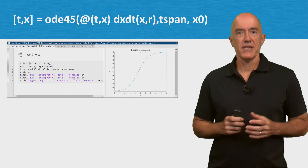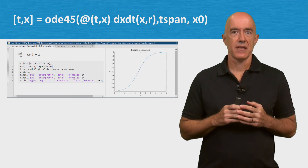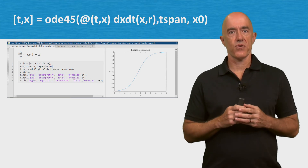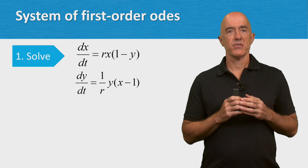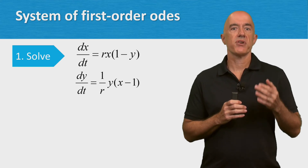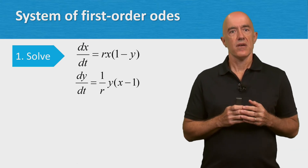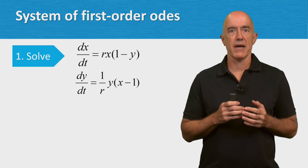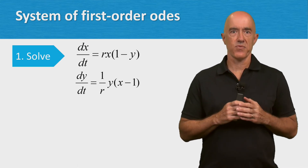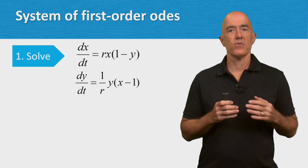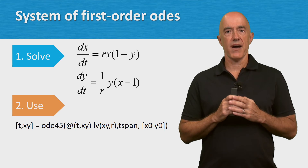The MATLAB function ode45.m is a powerful tool for integrating differential equations. Now let's look at integrating a system of first-order equations. We'll solve two coupled first-order ODEs called the Lotka-Volterra equations, or the predator-prey model. X is the prey and y is the predator. We have dx/dt equals r times x times (1 minus y), and dy/dt equals (1/r) times y times (x minus 1). We include r as a parameter, and we'll solve this system using ode45.m.